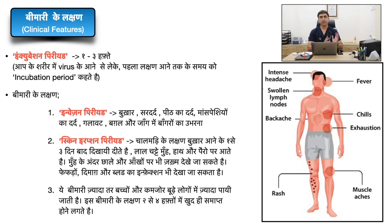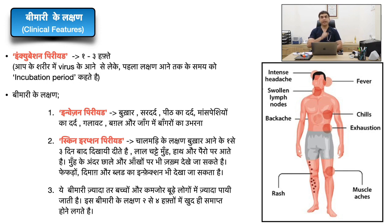This disease usually lasts 3-4 weeks, after which the body takes over the virus and the disease subsides. However, in some cases — such as young children, the elderly, or immunocompromised adults — the disease can worsen, leading to complications such as bronchopneumonia (lung infection), meningitis (brain infection), or sepsis (blood infection).